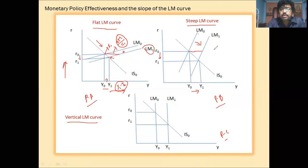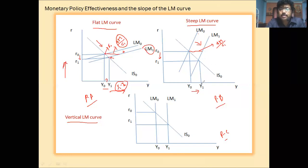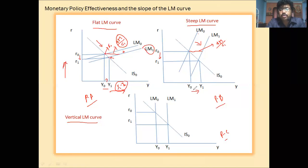The distance ΔM / C1 represents the total amount of income that could be increased as a result of the increase in money supply. Income increases from Y0 to Y1 for the same reason as in panel A: as the rate of interest falls, investment increases, and therefore income increases.